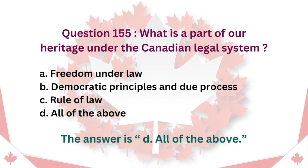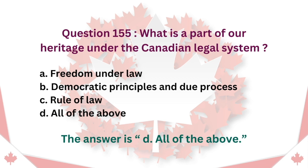Question 155: What is a part of our heritage under the Canadian legal system? A. Freedom under law. B. Democratic principles and due process. C. Rule of law. D. All of the above. The answer is D. All of the above.